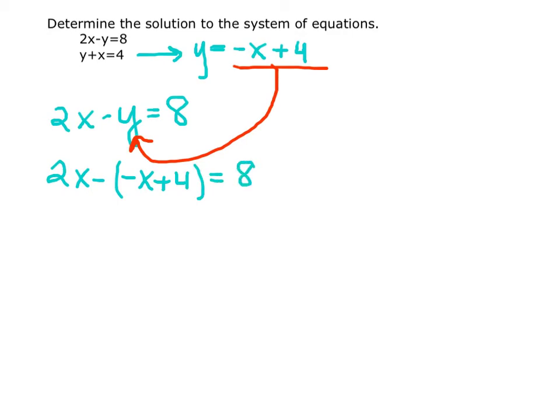By distributing this negative 1 into the parentheses, we have 2x plus x minus 4 equals 8.